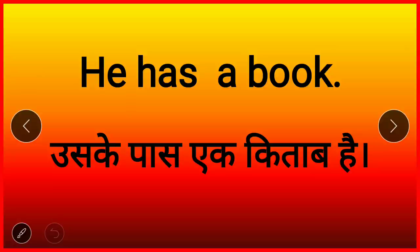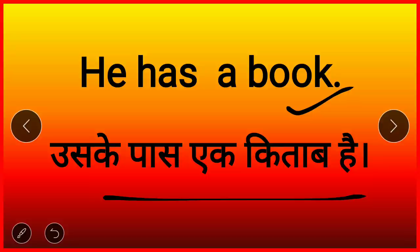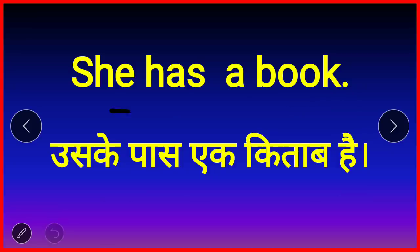Let's see with examples. Just as we used have with I, you, we, and they — same structure. With he, she, it, and names, we use has. 'He has a book' — uske paas ek kitab hai. 'She has a book' — uske paas ek kitab hai.